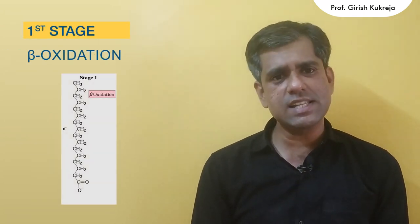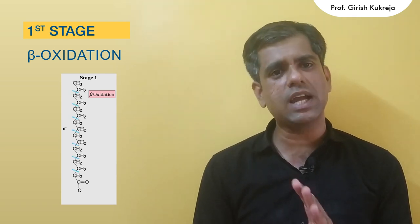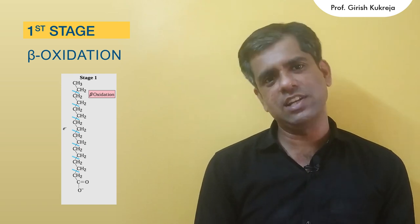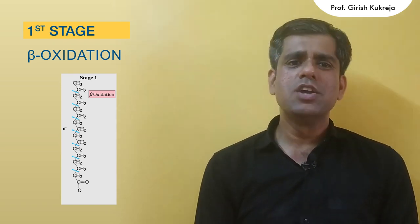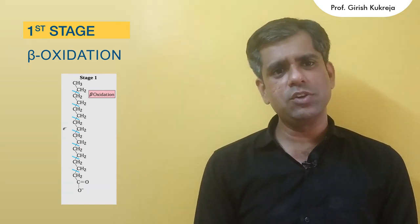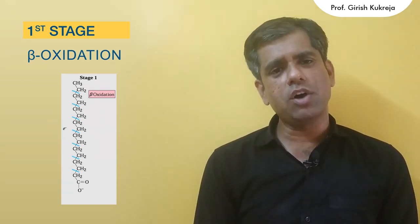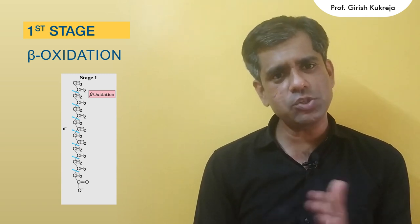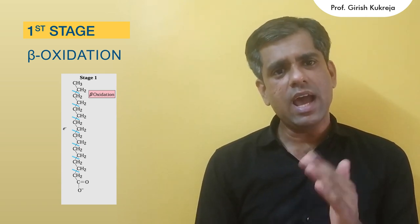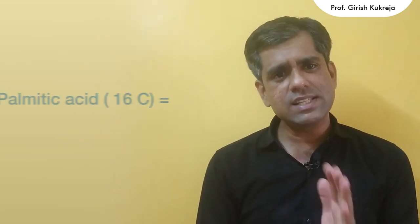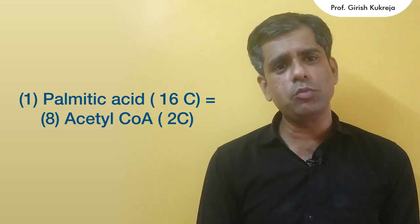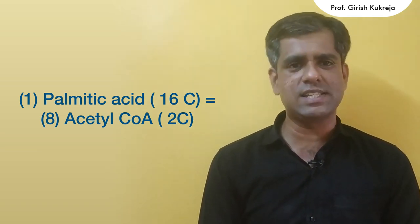It is the successive removal of two carbon atoms starting from the carboxyl terminal of the fatty acid in the form of acetyl-CoA. For example, you start with a 16 carbon atom that is palmitic acid. This palmitic acid will undergo seven passes of beta oxidation. The last two carbons, that is 15 and 16, remain as acetyl-CoA. Thus in all, a 16 carbon fatty acid will result in the formation of eight molecules of two carbon acetyl-CoA.